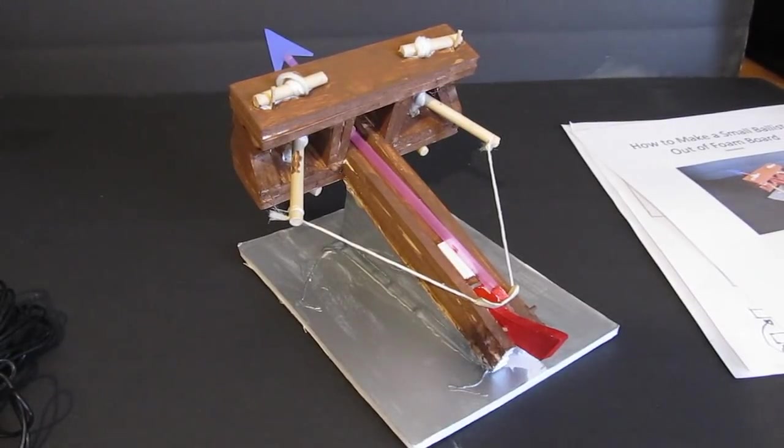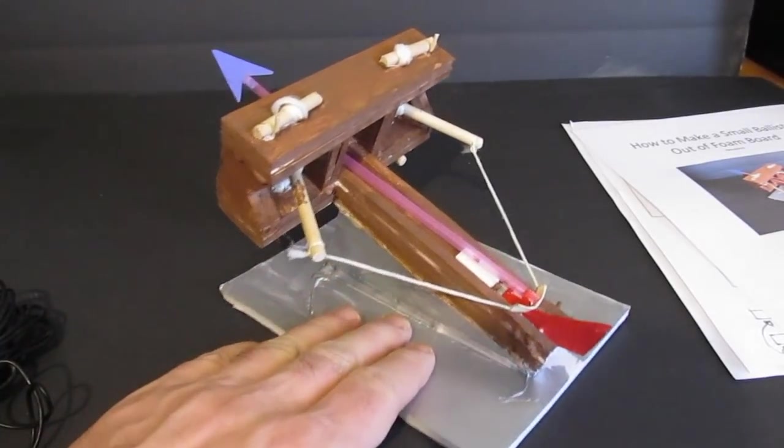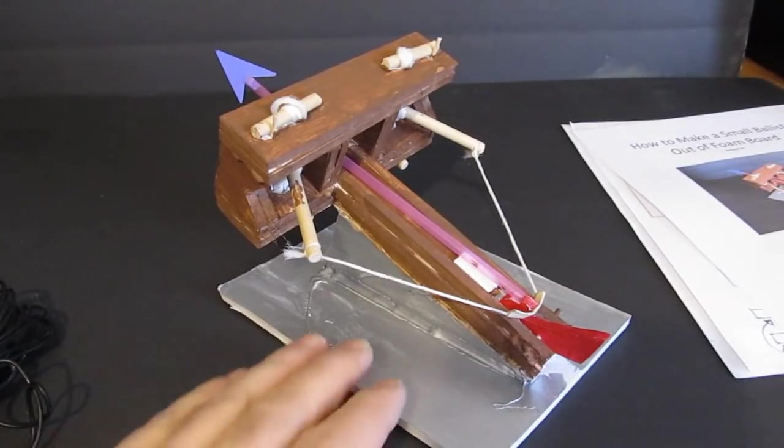This is a fun little project. It is how to make a miniature ballista. A ballista is an ancient siege weapon. The ancient Greeks and the ancient Romans used it a lot for warfare, and it's actually quite an interesting thing.